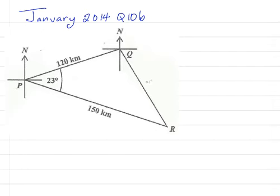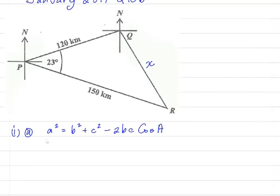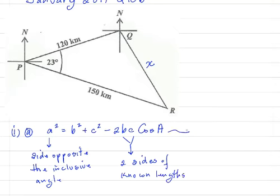We want to find X and we're going to apply the cosine rule. The cosine rule says A squared is equal to B squared plus C squared minus 2BC cosine A. A is the side opposite the inclusive angle, and B and C are the two sides of the non-right angle triangle.